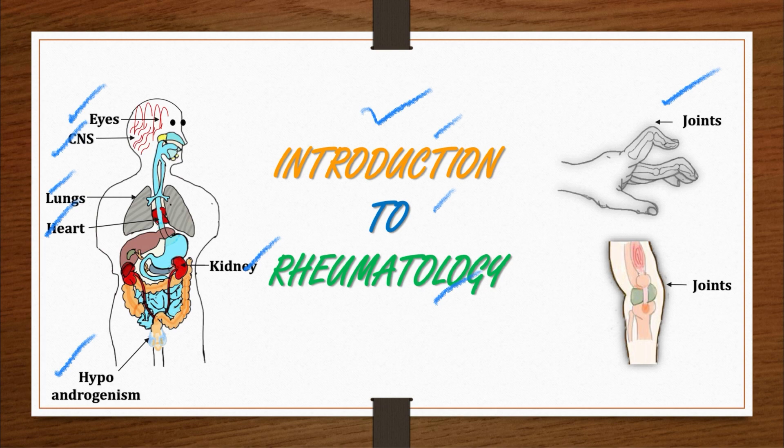Each color represents something different. Saffron color stands for courage and bravery. White color represents peace, unity, and truth. Green stands for faith, fertility, and prosperity. It's beautiful and respectful — love your country and others too.